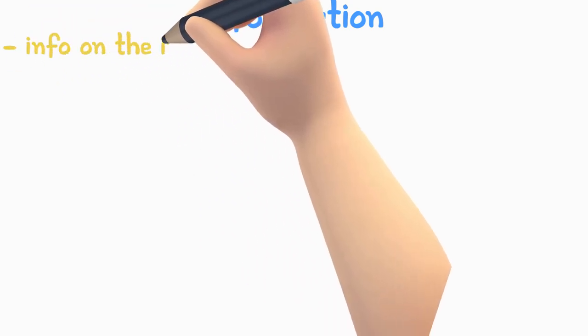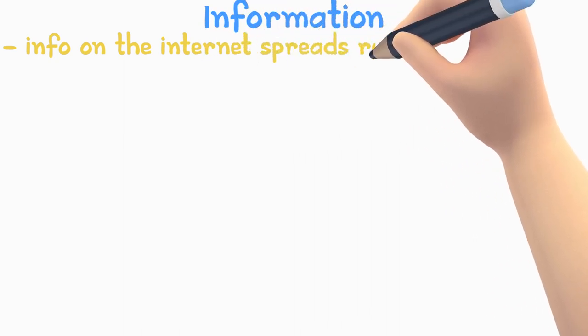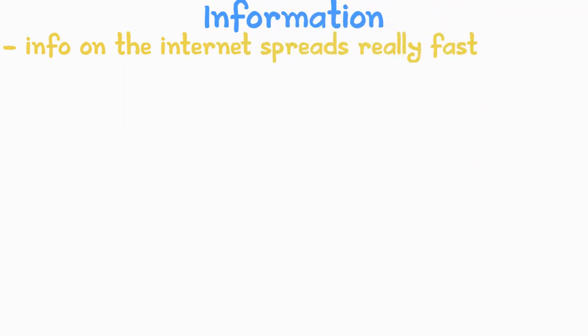Information. With the internet, people can get more information from whatever field they are interested in. Information on the internet spreads really fast, so users will be up-to-date on information.